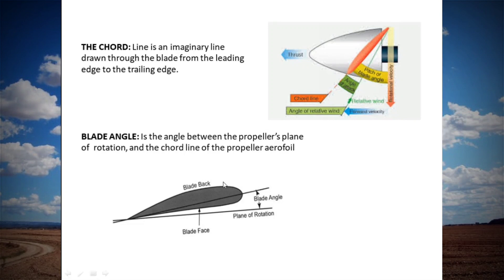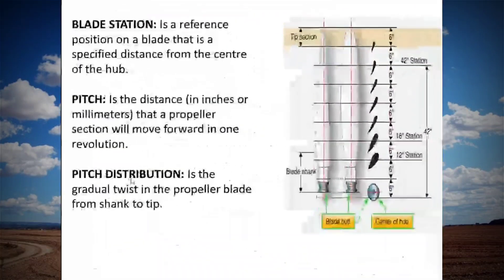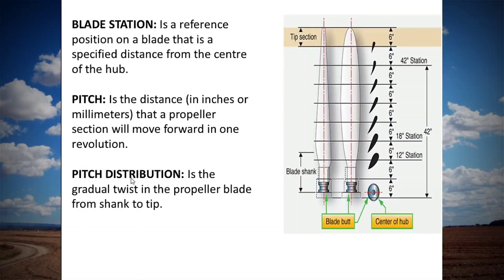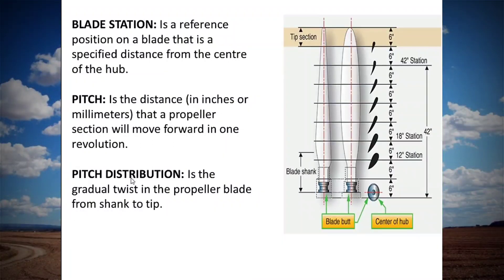Now blade station. Suppose you are working on a propeller and if you found any mark or dent on the propeller, so the question is how will you communicate to your manager? To make it simplify, the propeller is divided in several segments and every segment is 6 inches apart from the other. So suppose if you are communicating there is a dent at station number 2, it means 2 times 6 equals 12 inches away from the hub. So station number always increases from hub to tip.